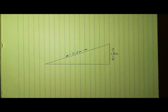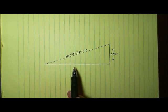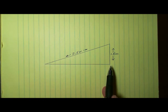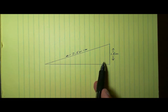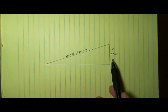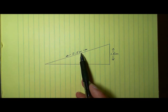We're talking about simple machines and mechanical advantage. We've already talked about levers — first, second, and third class levers — and in this situation, we're going to be talking about a simple machine called an inclined plane, also sometimes referred to as a ramp. If you look right here, I've drawn an inclined plane that has a height of 1.5 meters and a length up the side of the ramp of 3.5 meters.